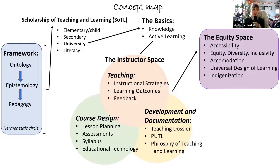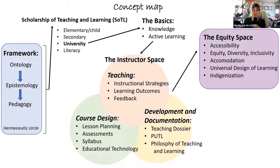That was a lot and I went through it very quickly. Let's revise the concept map. We discussed ontology, epistemology, pedagogy, and the hermeneutic circle. Now that you've understood this, you understand the teaching and learning space a little bit better. As you go on and do more instruction, you'll better understand learning outcomes and assessments, and we'll keep going in this circle, continuing your learning of this space. We've touched on the basics, the teaching instructor space, and the equity space.